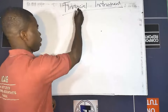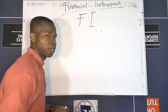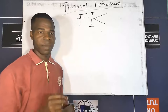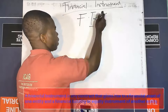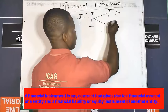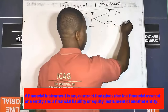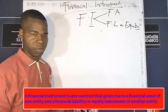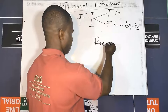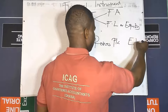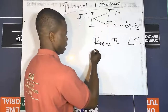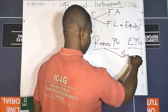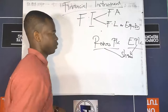So the first thing we want to look at is: what is a financial instrument? When we say financial instrument, we are basically looking at two things. It is a contract that gives rise to a financial asset of one entity and a financial liability or equity instrument of another entity. For instance, if we have Ronald's PLC and E PLC entering into a contract — these are different entities — assuming Ronald's PLC is buying shares or investing in shares in E PLC.